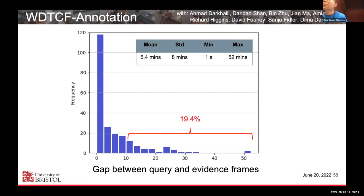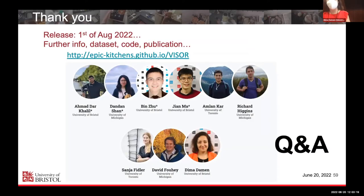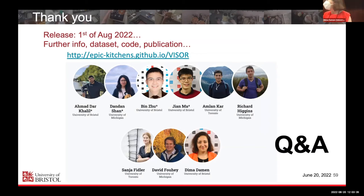This work is presented on behalf of a large team from three universities. The dataset release will be on the 1st of August. For further information on the dataset, code for baselines, and relevant publications, please go to EpicKitchens.com/visor.